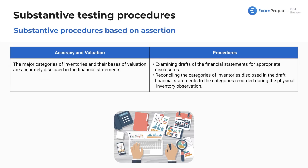Lastly, for valuation and accuracy: our concern is that the major categories of inventories and their bases of valuation are accurately disclosed in the financial statements. We're going to examine drafts of the financial statements for appropriate disclosures, and reconcile the categories of inventories disclosed in the draft financial statements to categories recorded during the physical inventory observation. For example, if it's a simple company with three types of inventory but the disclosures only list two, you observed three during the inventory count — you can clearly see the difference. That being said, let's wrap it up.